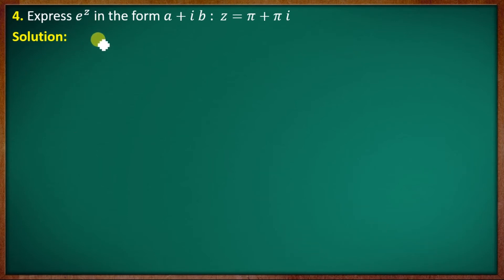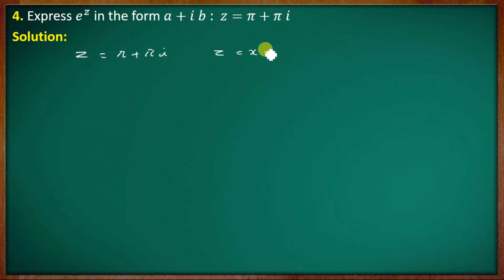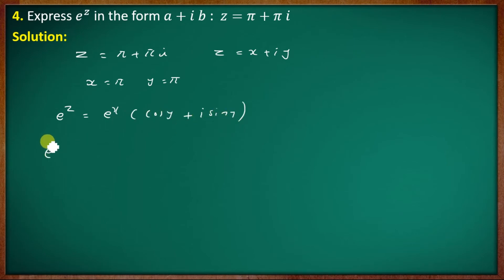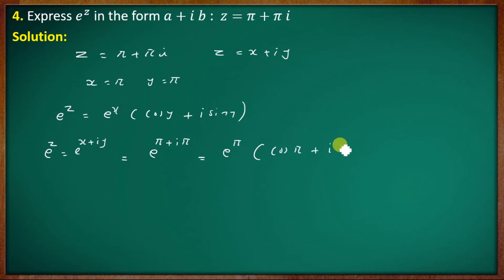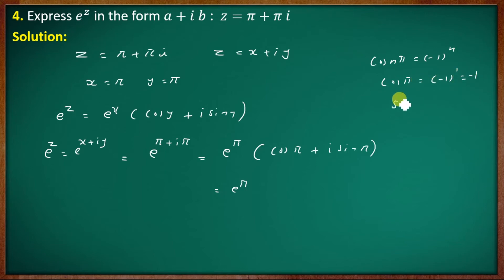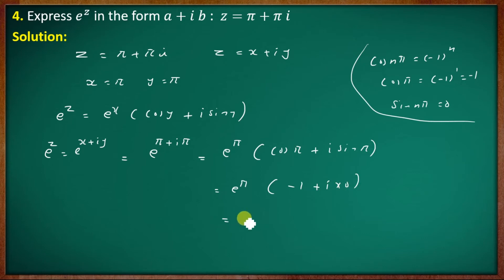Fourth problem: express e raised to z in the form a + ib where z equals π + πi. So x equals π and y equals π. e raised to z equals e raised to π times (cos π + i sin π). Now cos(nπ) equals (−1)^n, so cos π equals −1. And sin(nπ) is always 0. So this equals e raised to π times (−1 + i·0) equals −e raised to π.